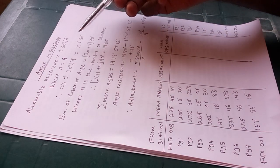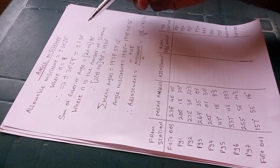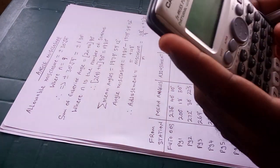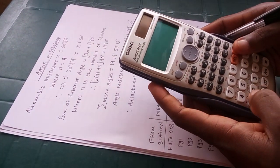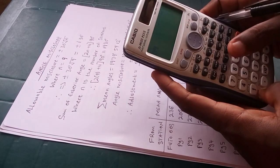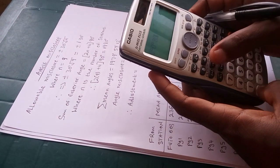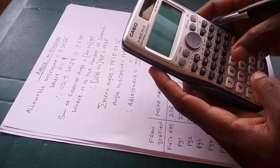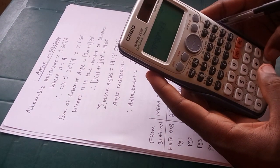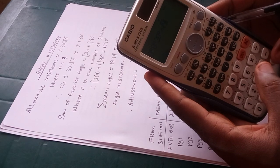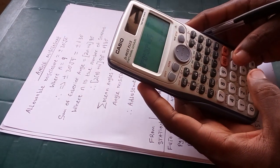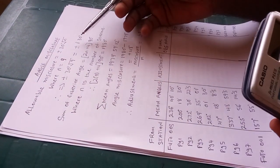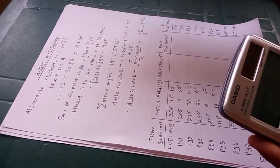For our number of stations we have nine, so to compute the allowable misclosure: zero degrees, zero minutes, 30 seconds multiplied by the square root of nine. The square root of nine is three, so we compute which gives us one minute 30 seconds. So your misclosure at the end of the day should not be more than plus or minus one minute 30 seconds.